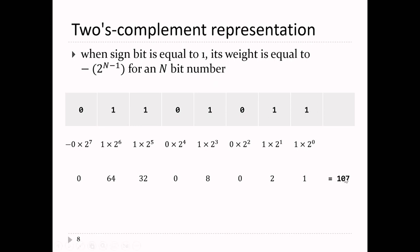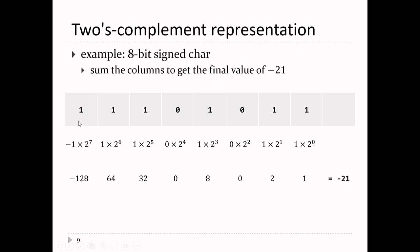That number is still 107 because the first digit's zero. As soon as I flip that bit, the weight of that bit becomes minus 128. So the total value of this binary number becomes minus 21. Two's complement: the most significant bit determines the sign of the number. If it's one, it's negative. If it's zero, it's non-negative.